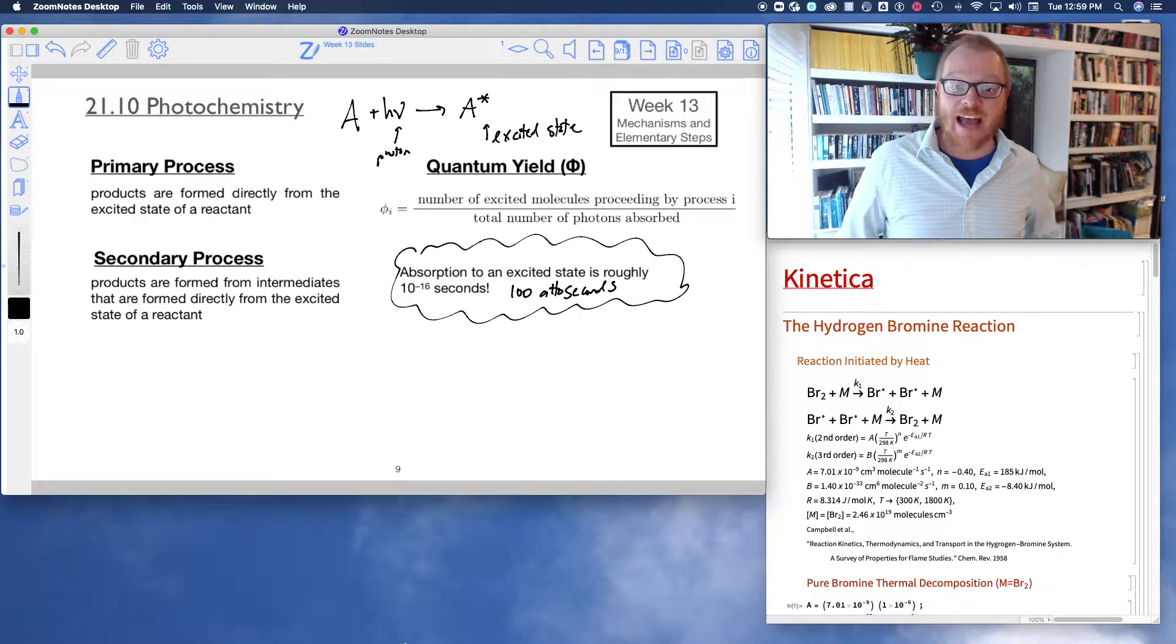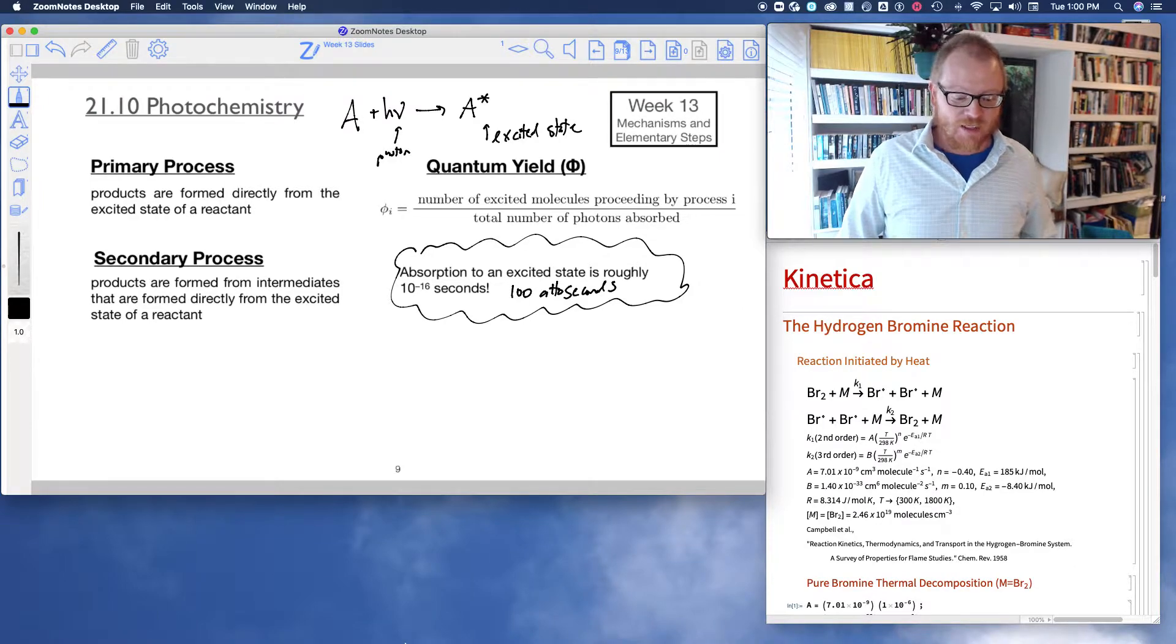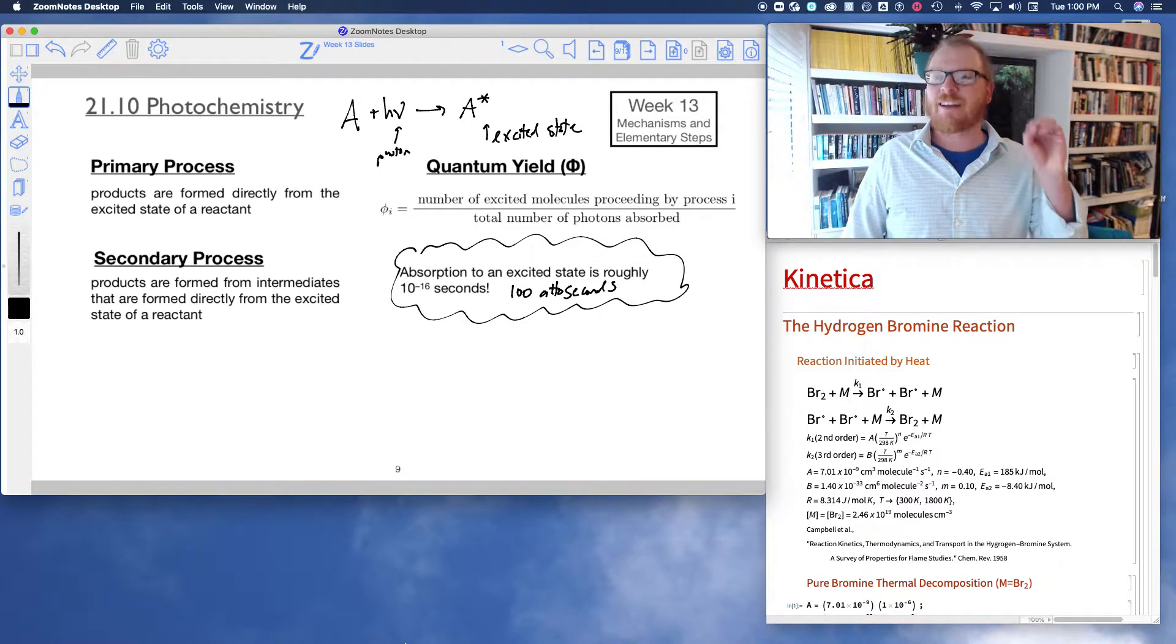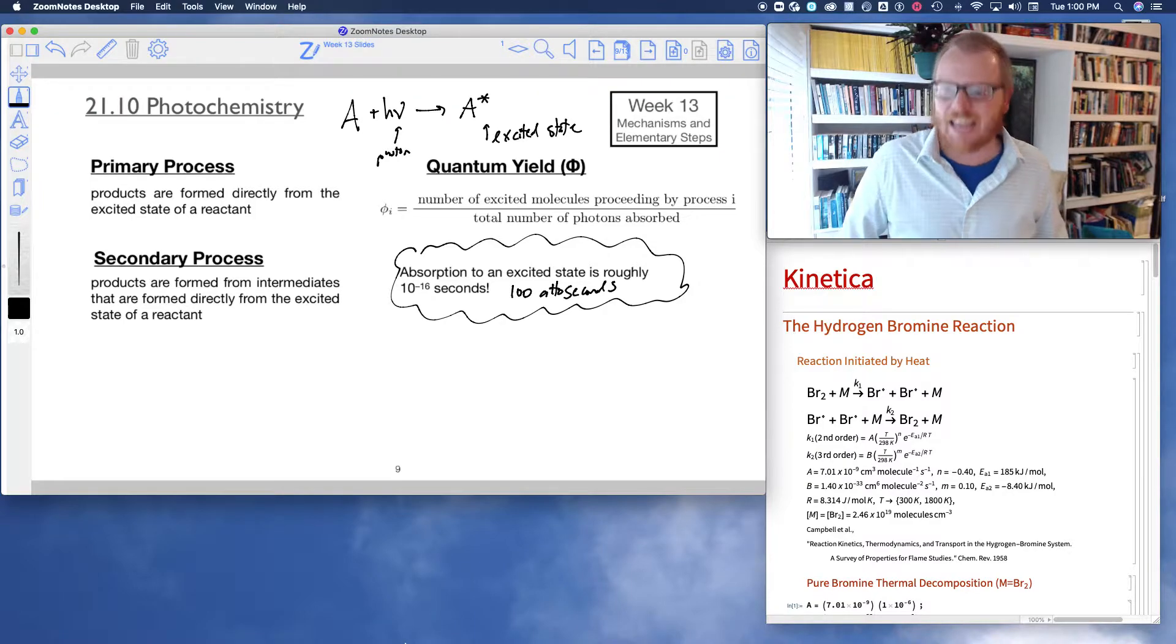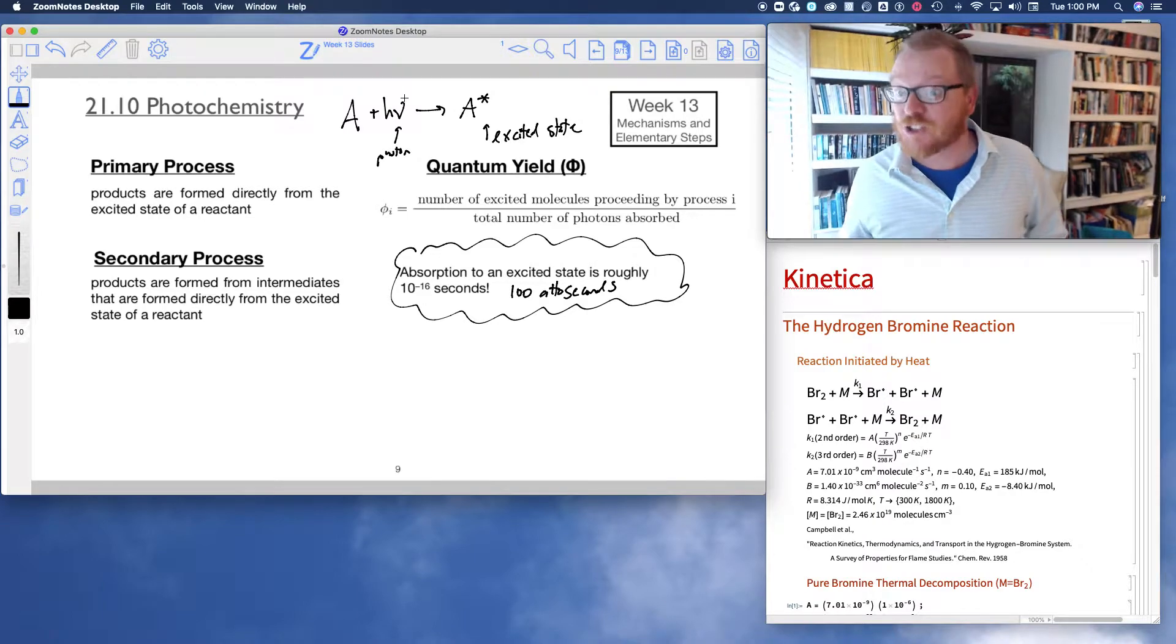And did you know that actually the fastest man-made event in human history is a laser that can be fired at pulses roughly every 70 attoseconds? Someone at Berkeley was able to do that. Of course, it was Berkeley. A laser that can fire every 7 times 10 to the minus 16 seconds. Crazy fast. So this is not going to be the rate-limiting step. It's super-duper fast.